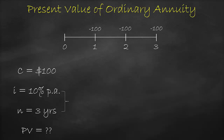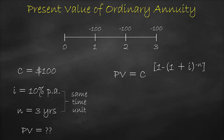Please note that in all time value of money questions, the interest rate and the number of periods must have the same time unit. This means if the interest rate is annual, we should express the number of periods in years. The present value formula is: cash flow multiplied by, open first bracket, 1 minus, open second bracket, 1 plus the interest rate, close second bracket, to the power of a negative number of periods, close first bracket, all divided by the interest rate.